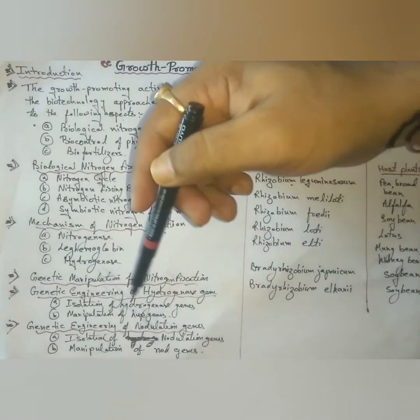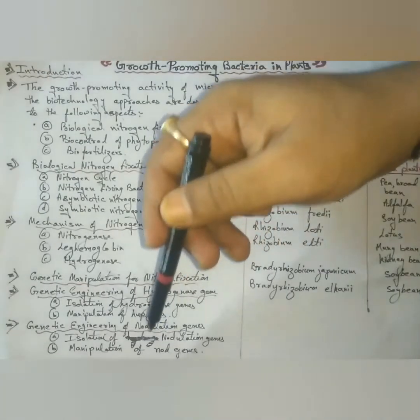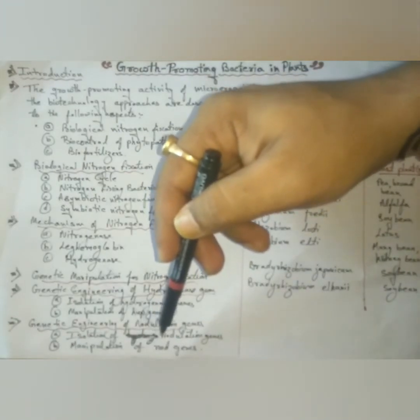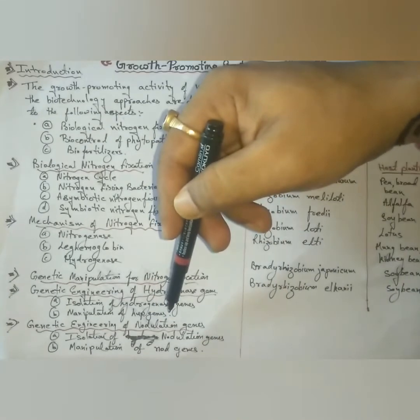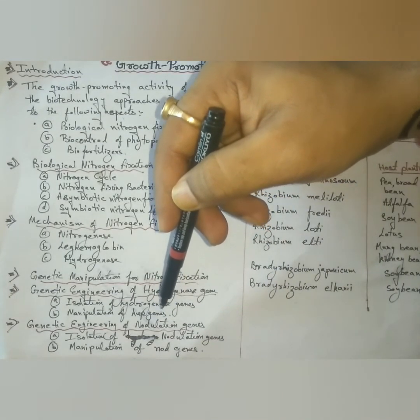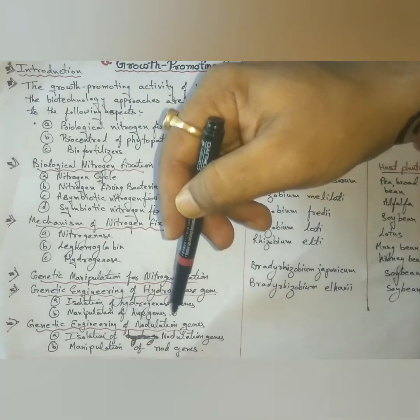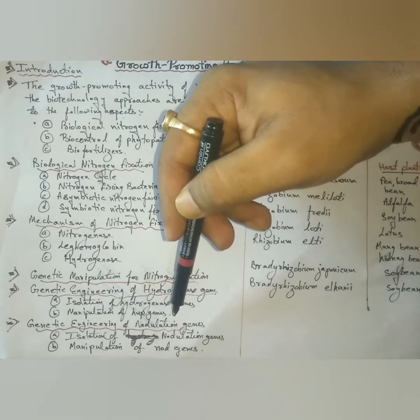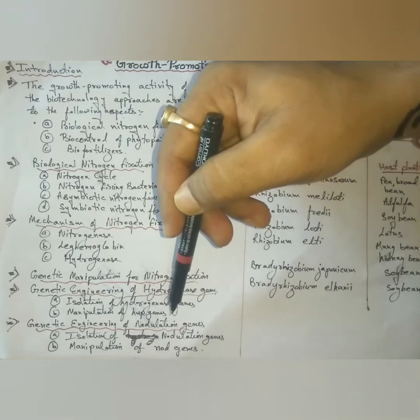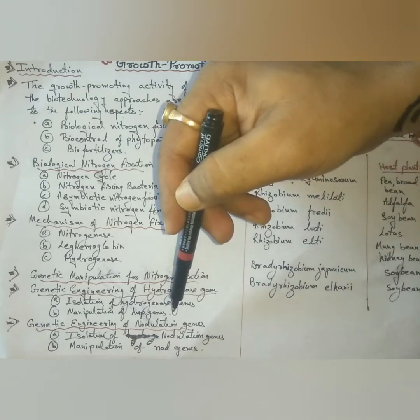Next, genetic engineering of nodulations genes. In this, isolation of nodulations genes and manipulation of nod genes. Establishment of nodules on the roots of leguminous plants is a prerequisite for nitrogen fixation. Certain genes involved in nodulations, namely nod genes, have been identified in Rhizobium meliloti. The technique of genetic complementations has been used to isolate nod genes from Rhizobium meliloti. A large number of nod genes, about 20 nod A to nod X, have been identified in diazotrophs.